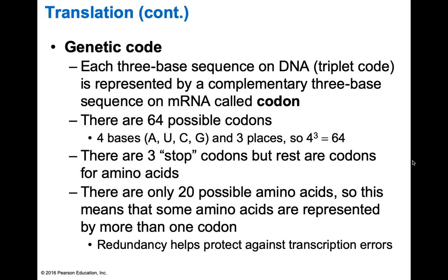Our genetic code uses a triplet code called a codon — and codons exist on mRNA. There are 64 possible codons: four different bases (A, U, C, G) in three possible positions gives 4³ = 64 combinations. Three of those are stop codons, bringing us down to 61 coding combinations. But we only use 20 amino acids in our bodies, so the code has redundancy. This redundancy helps protect against errors — if a substitution mutation occurs at the third position, it's highly likely that the redundant code still produces the correct product.